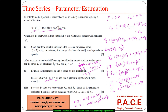Subtracting gives 0.3 = 4.8x, so x = 1/16. Then from 1 = 5x + y: 5x = 5/16, making y = 11/16.